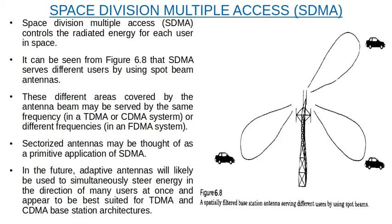Sectorized antennas may be thought of as a primitive application of SDMA. In the future, adaptive antennas will likely be used to simultaneously steer energy in the direction of many users at once, and appear to be best suited for TDMA and CDMA base station architectures. This SDMA technique spatially separates different users.